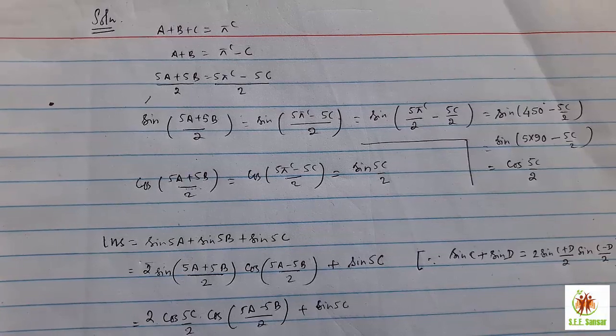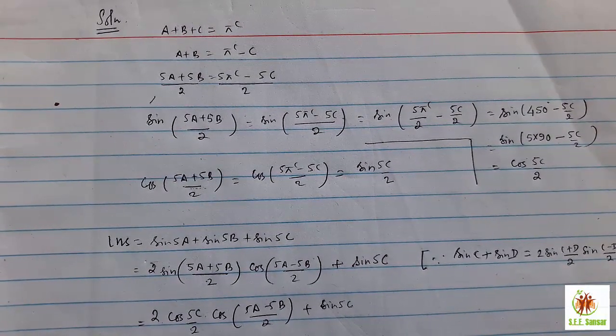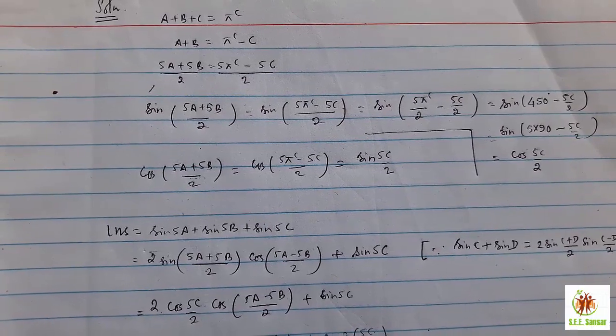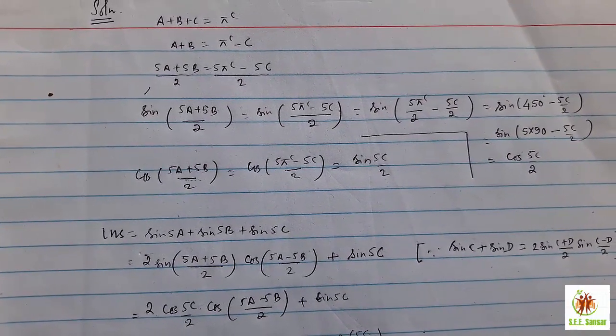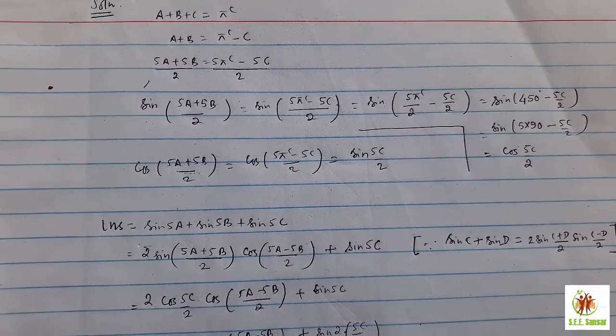There is in the condition a plus b, take that c into the right hand side, multiply by 5, then 5a plus 5b. Again divide by 2, then it will become something like this. 5a plus 5b by 2 equal to 5π radian equal to minus 5c by 2. And now take sin on both sides.